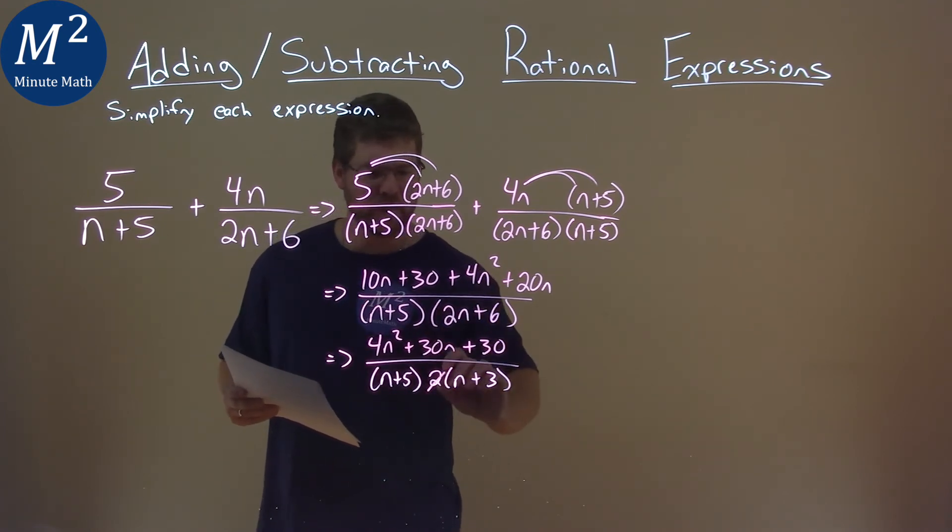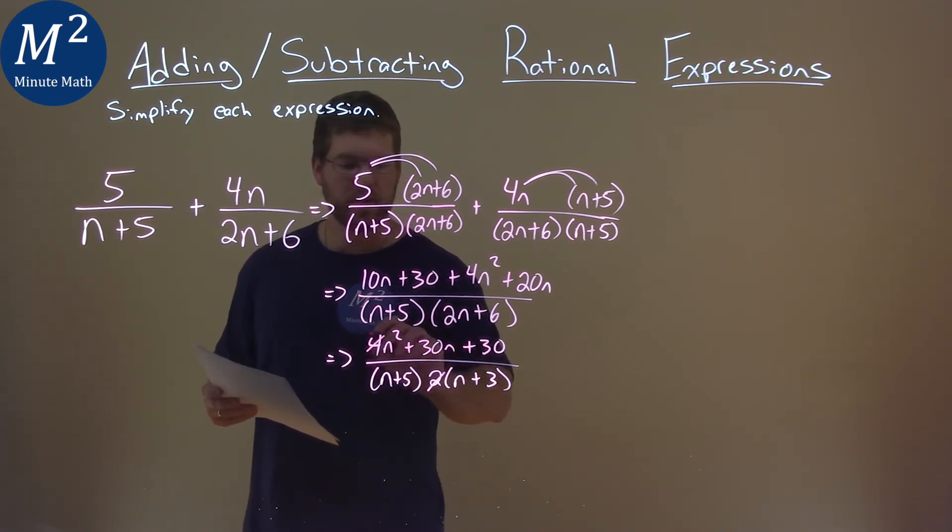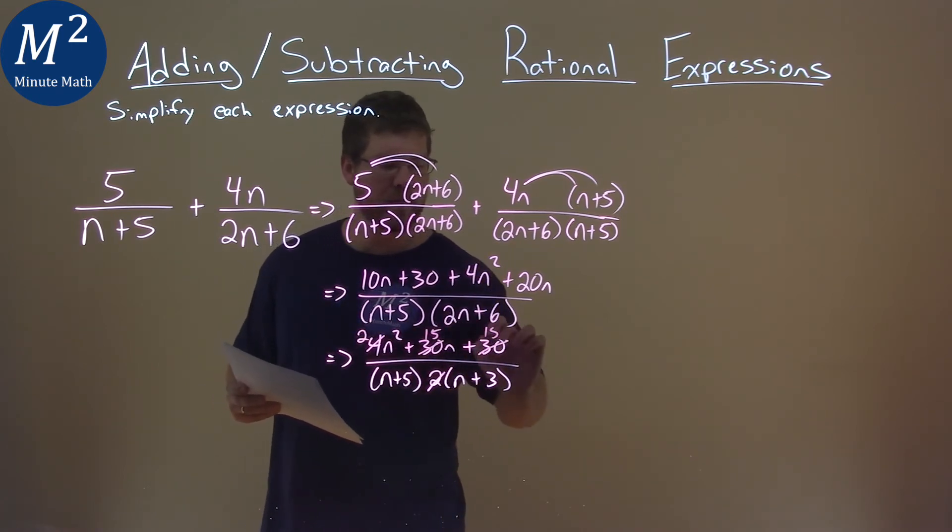So in doing that, we can kind of show it like this, cross that off. This becomes a 2, this becomes a 15, and this becomes a 15. It has to be to all parts.